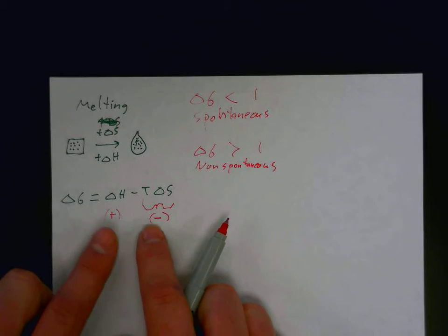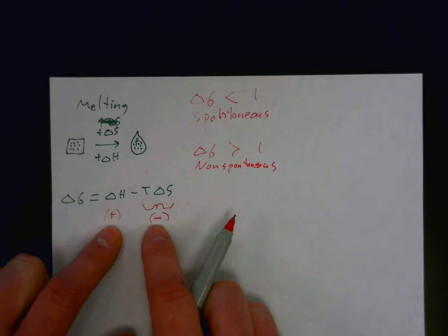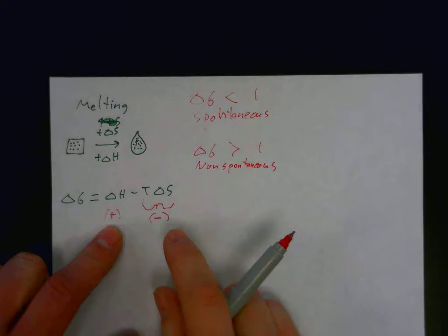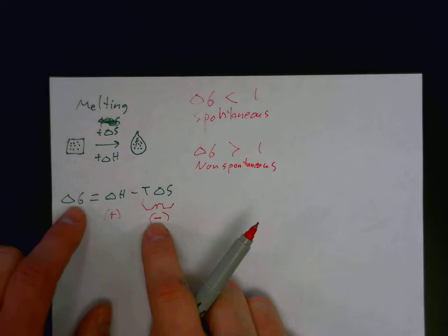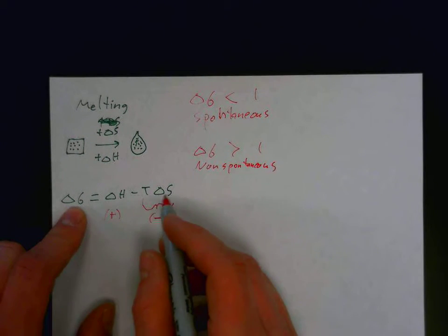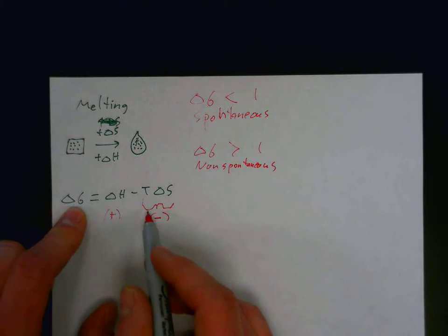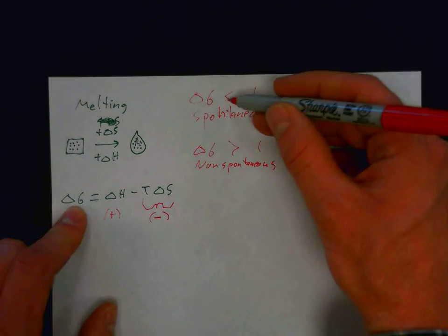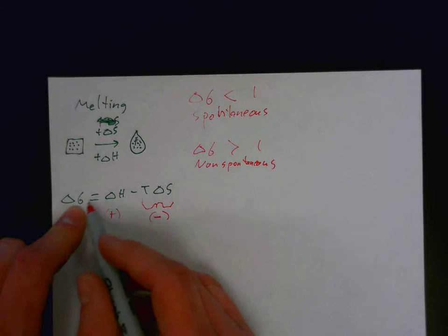So, now it comes down to a balance of how much the temperature affects this situation. In order for delta G to be negative, the entropy, this term, the entropy times the temperature, has to amount to a greater value than the enthalpy, so that the overall value for delta G comes out as negative.